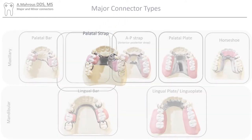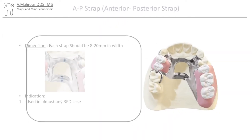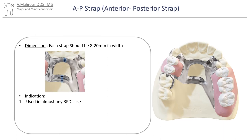Now let's talk about the AP or anterior-posterior strap. This major connector is composed of two individual straps, each about 8-20mm. The AP strap is one of the most widely used major connectors and can be used with the majority of RPD cases.